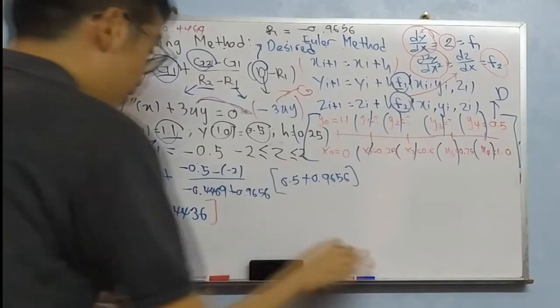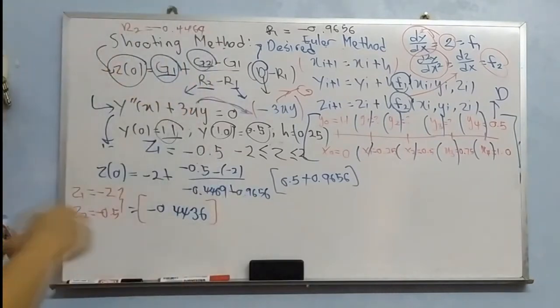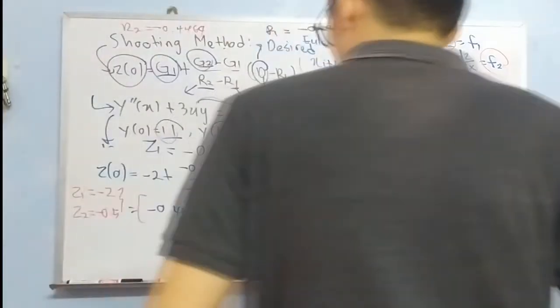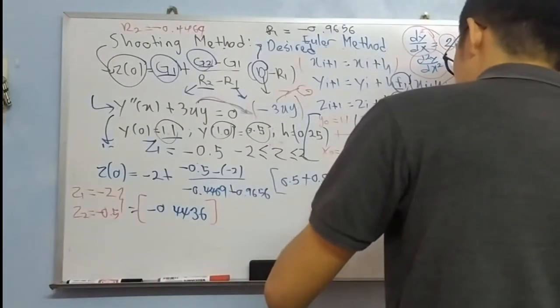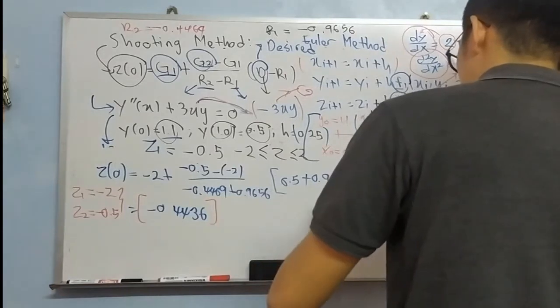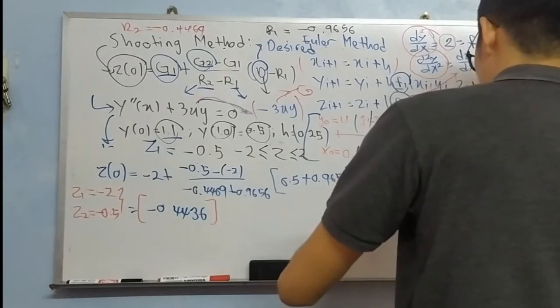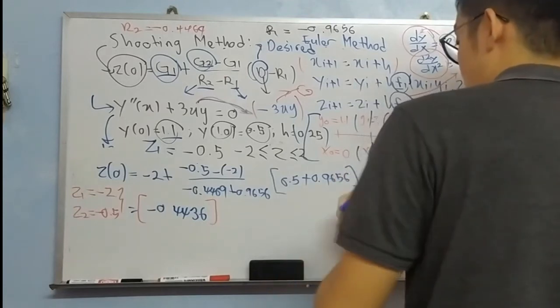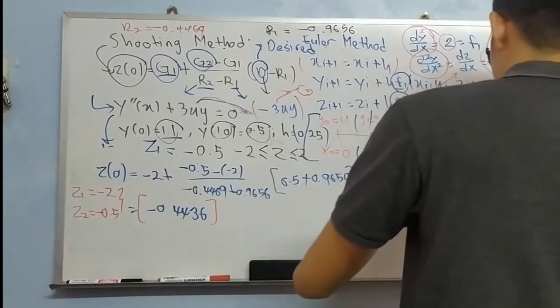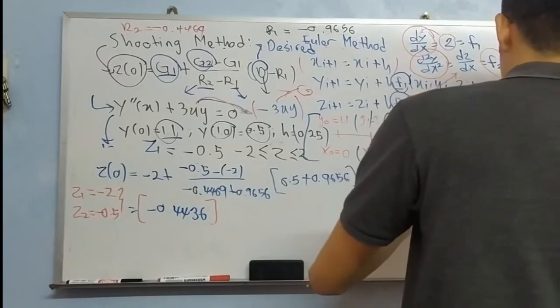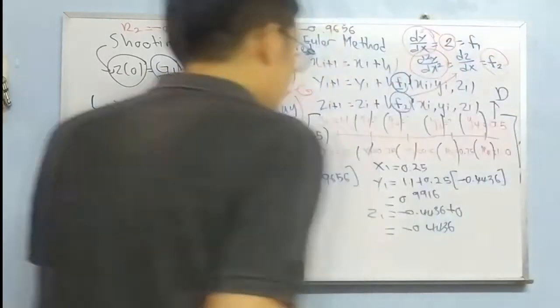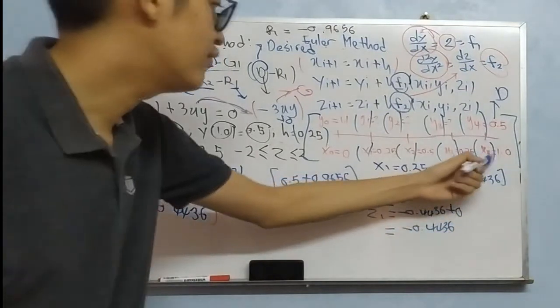Now, repeat again the same procedure. X1, 0.25, Y1: 1.1 plus 0.25, function of F1. Is that? Let me check: negative 0.4436. Again, you will repeat again the same procedure until X4.